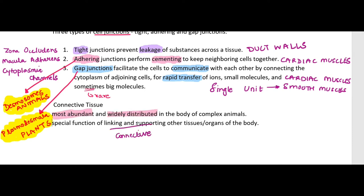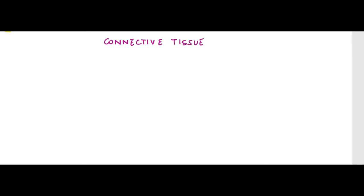As the name suggests, connective tissue's function is to connect, link, and support other tissues and organs of the body. To understand different connective tissues, I will first provide you with a flow chart which will help you understand connective tissue in a nutshell. We can classify connective tissue into three types: loose connective tissue, dense connective tissue, and specialized connective tissue.